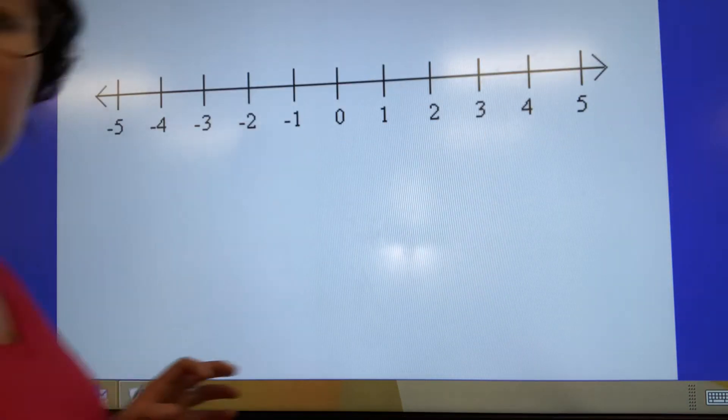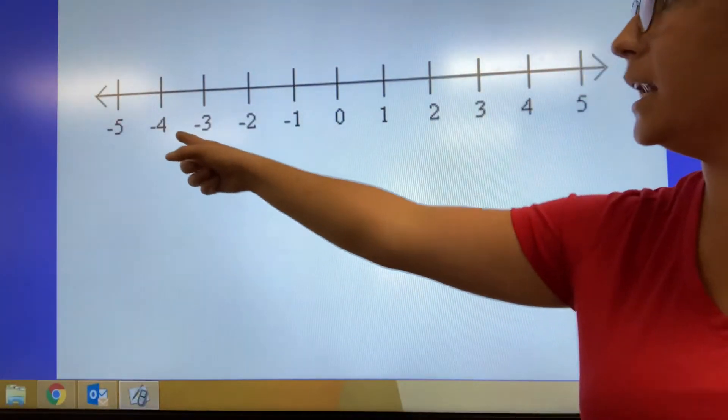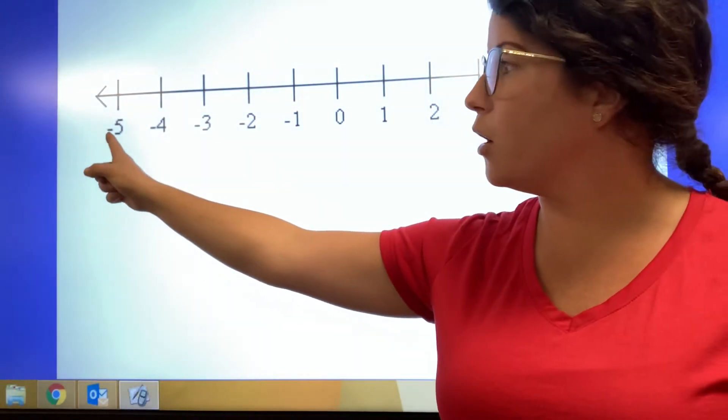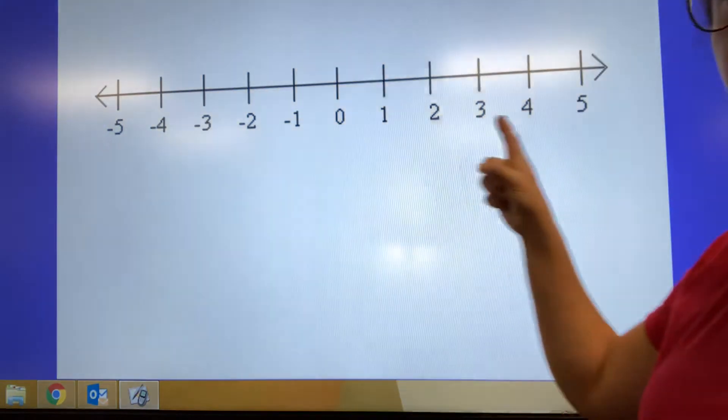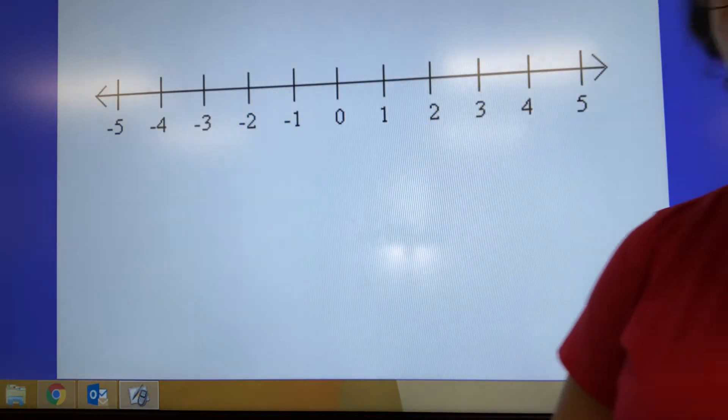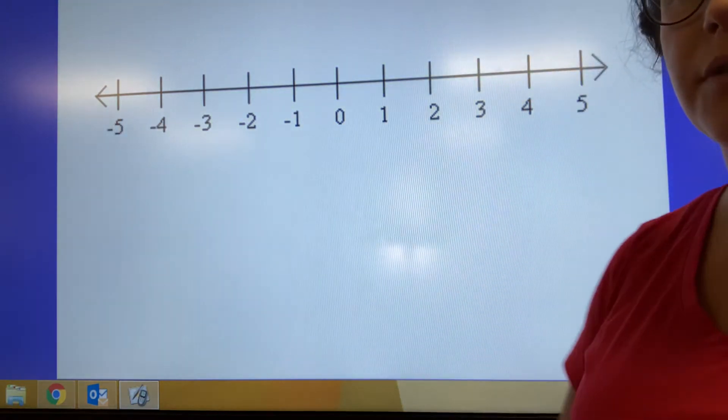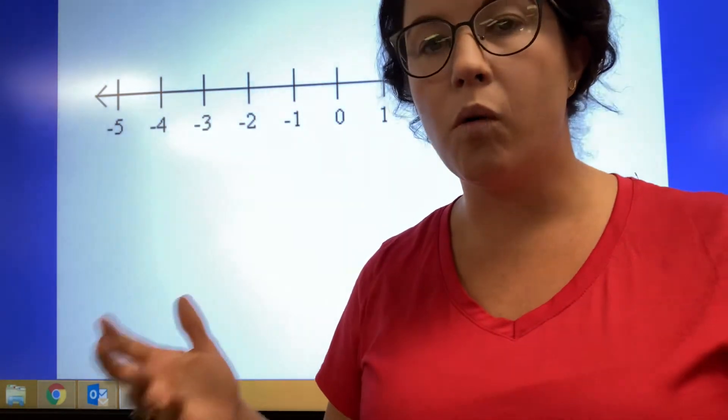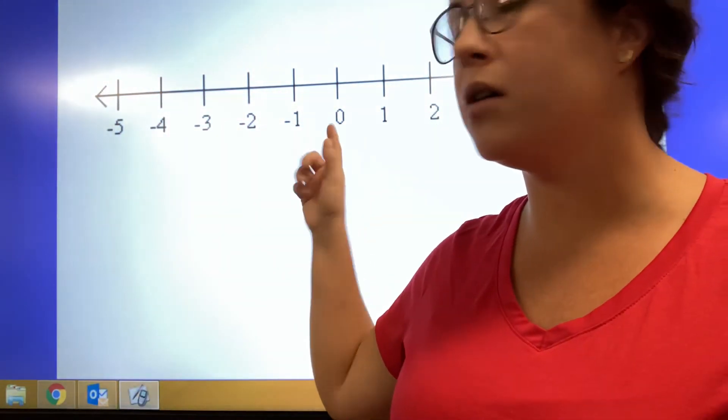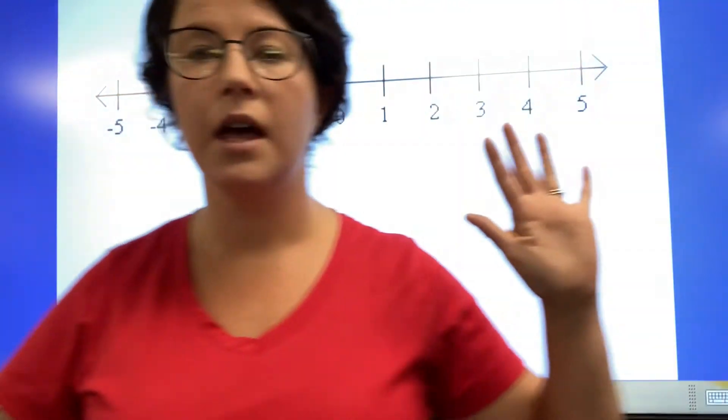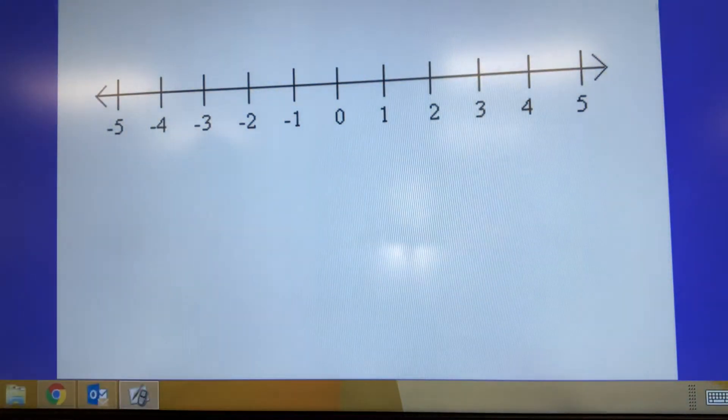So on this number line, we have both negative, you can tell by the little sign here, and positive numbers on our number line. So we have negative down here and positive up here. This has a whole range, and see that 0 is in the middle, to the right are the negative, and to the left are the positive.